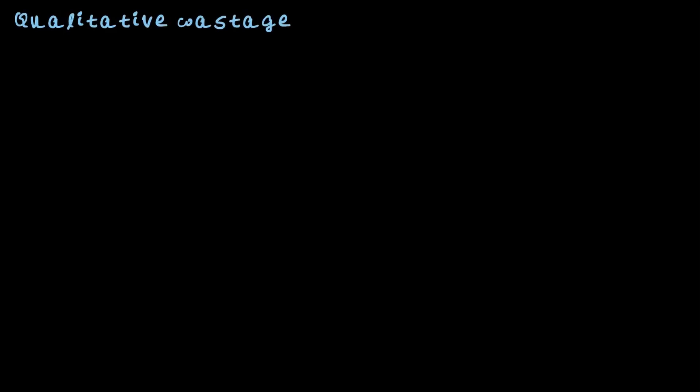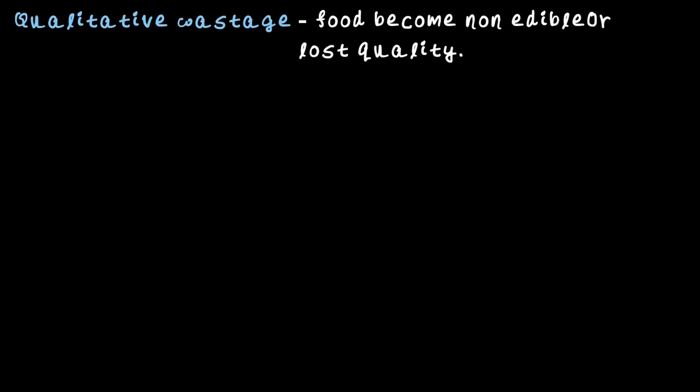The other type of wastage is qualitative wastage. This happens when the food becomes non-edible or loses its quality. It's not just about food going bad but also about losing what makes it good for us. Why do we eat food? We eat food because it provides us with nutrients. If the food is devoid of such nutrients, what's the point of eating it? That food is waste.